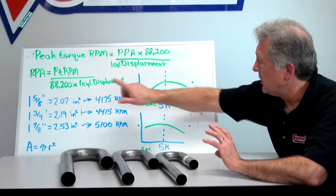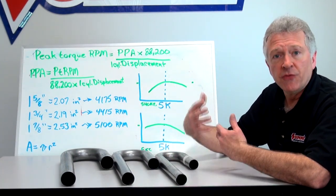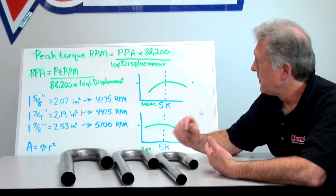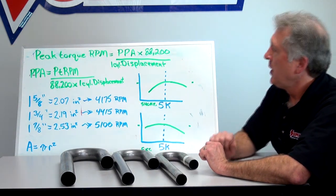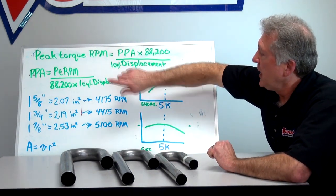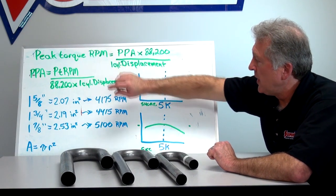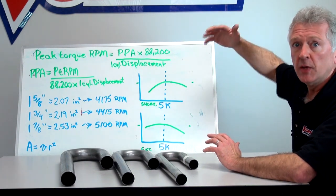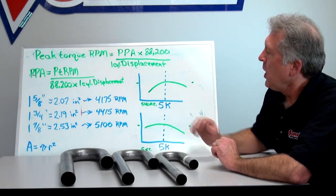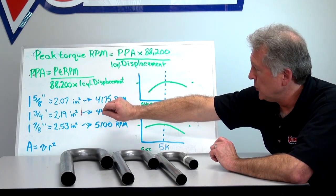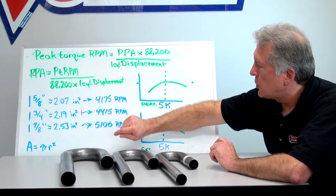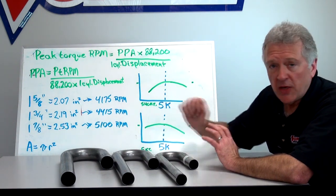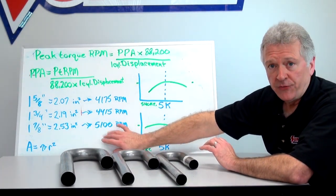My single cylinder displacement, based on 350 cubic inches divided by 8 cylinders, works out to 43.75 cubic inches per cylinder. When I start doing the math and plug everything in, I'm solving for my RPM because I want to get in this 5,000 RPM range for my race car. A 1-and-5/8 primary tube peaks around 41.75 RPM. A 1-and-3/4 primary tube peaks around 44.15 — still not quite to my 5,000 RPM range. When I look at a 1-and-7/8 primary tube diameter, theoretically I'm at 5,100 RPM.